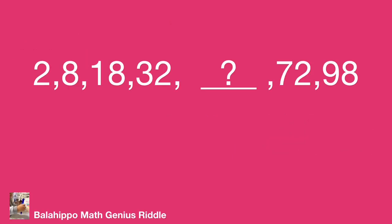The number series is 2, 8, 18, 32, then the missing number, after that, 72 and 98. Where shall we start? I cannot find any rule at first glance.